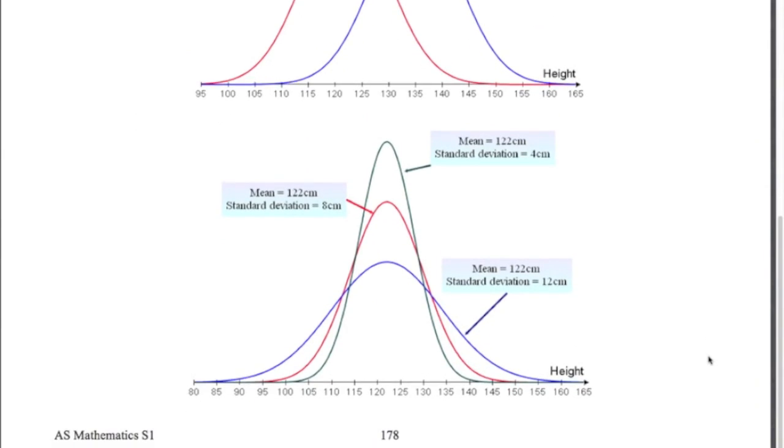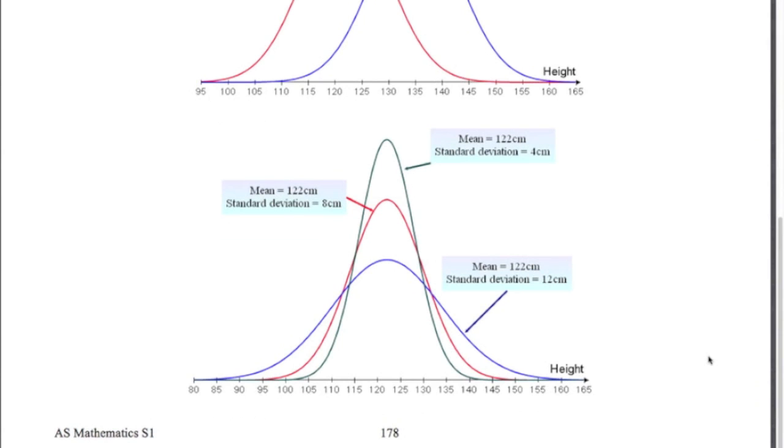If we change the standard deviation, the shape of the curve changes. So these three distributions all have a mean of 122, but the standard deviation has changed. As we increase the standard deviation, the curve flattens out more. There's more data within the range underneath the curve. If the standard deviation is smaller, here for the green curve the standard deviation is only 4, you can see the curve is a lot skinnier.